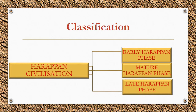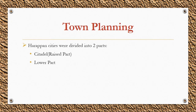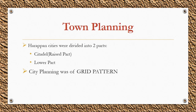Now let us revisit our ancestors and learn about life and culture in detail. The Harappan city was divided into two parts: the citadel or raised part, and the lower part. The citadel was situated to the west of the city, occupied a smaller area, and was usually where the rulers lived. The lower part, where common citizens lived, was situated to the east and was generally larger. The city planning roughly followed a grid pattern, with streets running north to south and cutting at right angles.